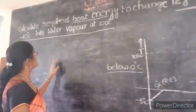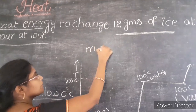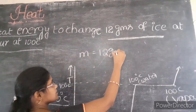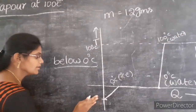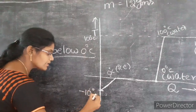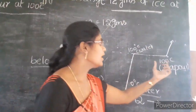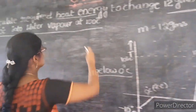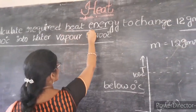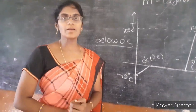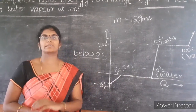Now coming to the problem: calculate the heat energy required to change 12 grams of ice at minus 10 degrees Celsius into water vapor at 100 degrees Celsius. We will solve this in 4 stages: Stage 1 — minus 10°C to 0°C ice; Stage 2 — 0°C ice to 0°C water; Stage 3 — 0°C water to 100°C water; Stage 4 — 100°C water to 100°C water vapor.